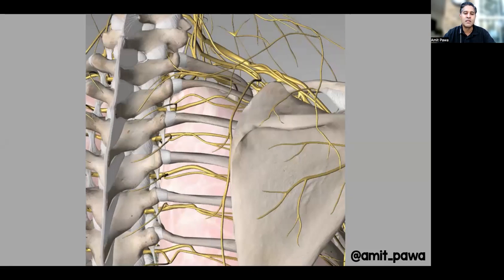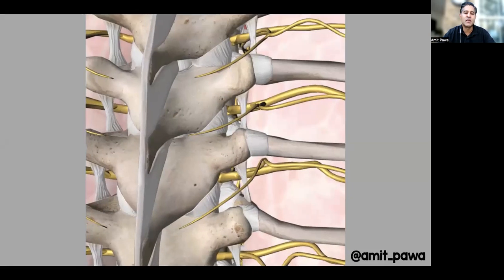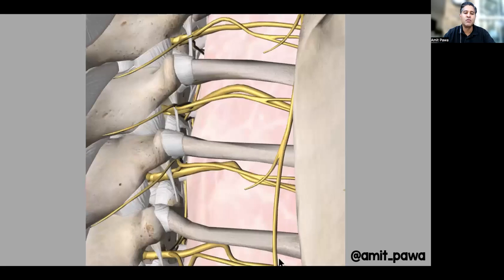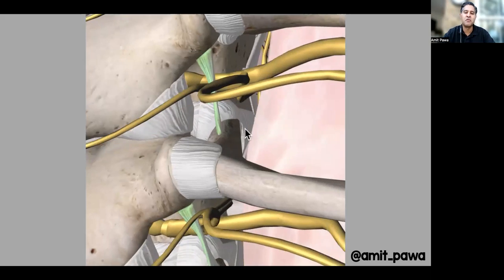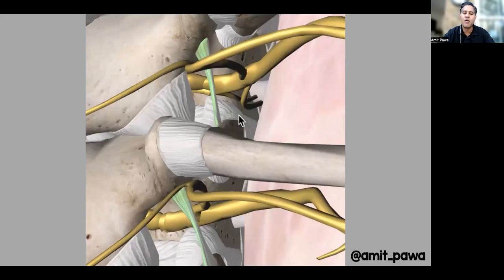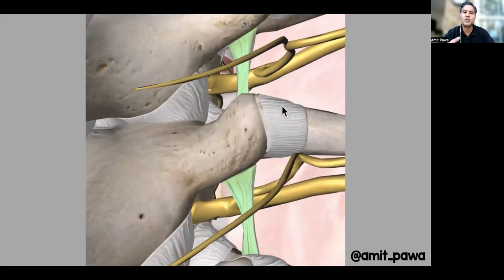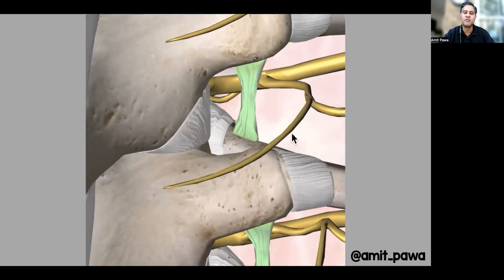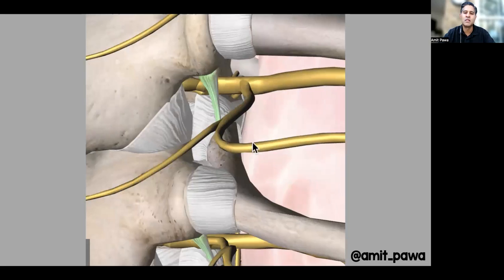Because of the nature of the thoracic vertebral bodies, you'll notice the spinous process of the vertebra above slants down over the vertebral body below, and that's relevant when we scan later. I've highlighted a green structure that passes from the rib below to the transverse process above. That structure is really important — the superior costo-transverse ligament, which I've highlighted here, was key in my formative training.